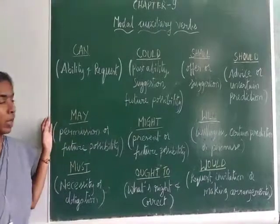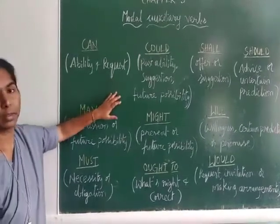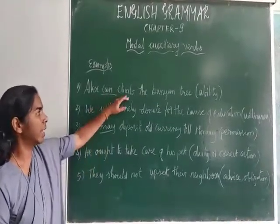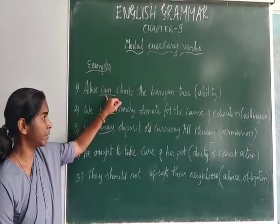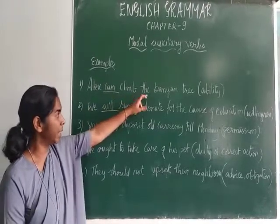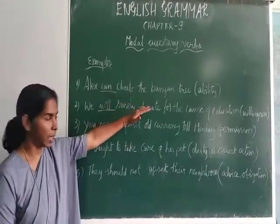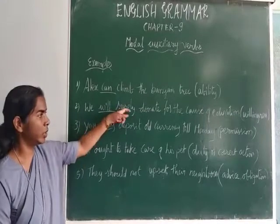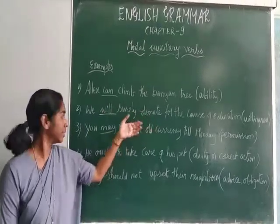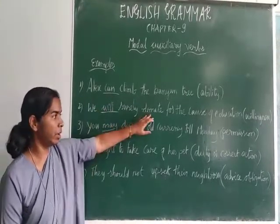These are the Modal auxiliary verbs, used to express various functions. Let's understand with a few examples. First: 'Alex can climb the diamond tree' — here can is used to express Alex's ability to climb the tree, meaning Alex is able to climb it. Second: 'We will surely donate for the cause of education' — here will expresses willingness, meaning they are willing to donate for the cause of education.